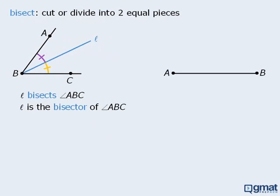We can also use the word bisect in a different way. If a line divides a line segment into two equal lengths, then that line bisects the line segment.